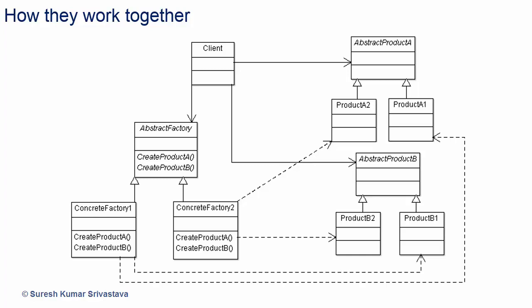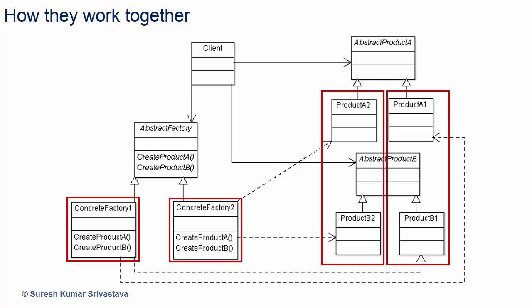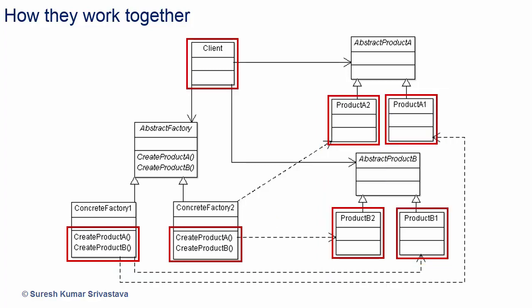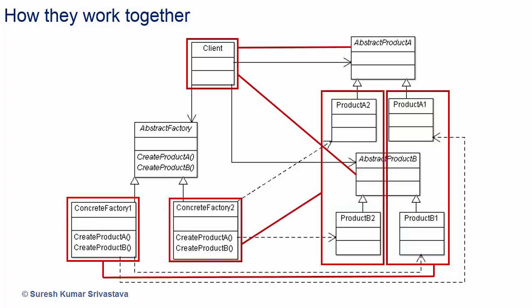Let's see how they work together. The concrete factory creates the family of products. Concrete Factory 1 methods create Series 1 products, and Concrete Factory 2 methods create Series 2 products. The client does not have any information about concrete product classes — that knowledge is encapsulated in the concrete factory. Each concrete factory creates a set of objects for a family, and the client uses those objects. Instantiation is separated from use.